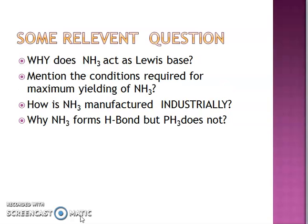Some related questions for you to answer: Why does NH3 act as Lewis base? — because it has a lone pair which is easily available. Mention the conditions required for maximum yield of NH3 — as discussed in Haber's process: low temperature and high pressure, with explanation. How is NH3 manufactured industrially? — write Haber's process. Why does NH3 form hydrogen bonds but PH3 does not? — because nitrogen is more electronegative, and highly electronegative elements form hydrogen bonds, whereas phosphorus has lower electronegativity than nitrogen.